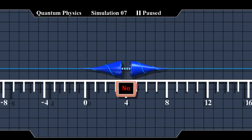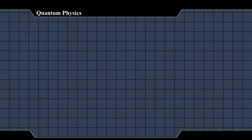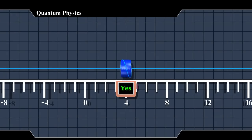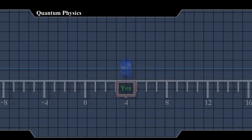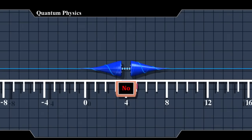The measurement also changes the wave. If the result is yes, the part outside the range gets zeroed out. Otherwise, the part inside the range is zeroed out. This is called wave function collapse.